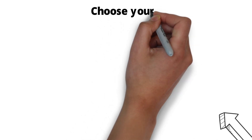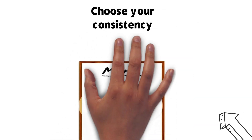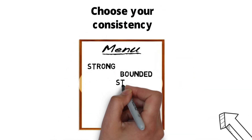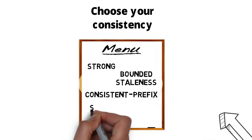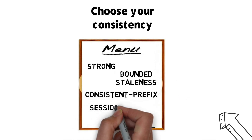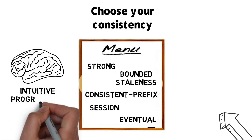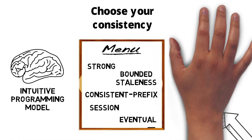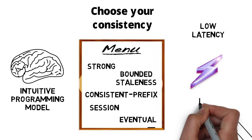Cosmos DB also allows you to select your consistency level. You could select strong, bounded staleness, consistent prefix, session, or even eventual consistency. Because of this intuitive programming model, it gives developers the ability to achieve low latency and high availability.